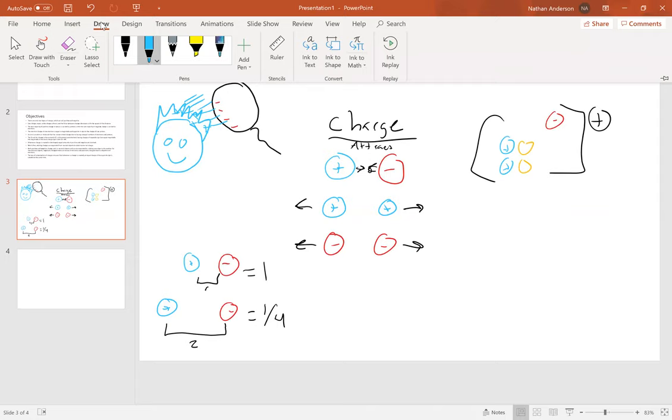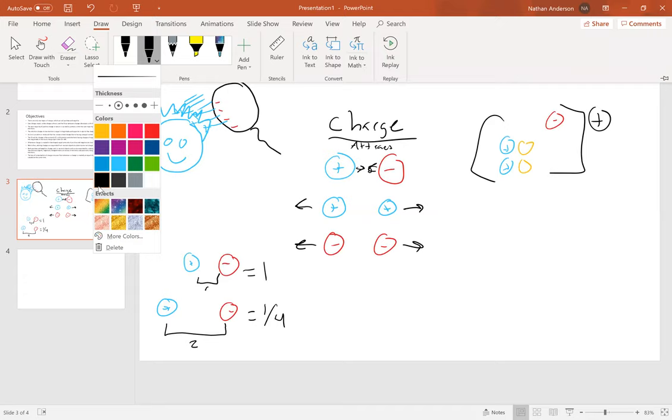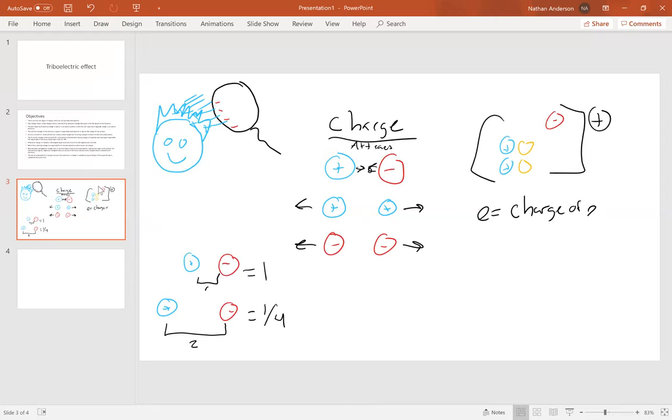...to the proton and the electron - the basic unit for charge, we represent it as e. That'll be the charge of a proton. Since the electron is equal in magnitude to the charge of the proton...